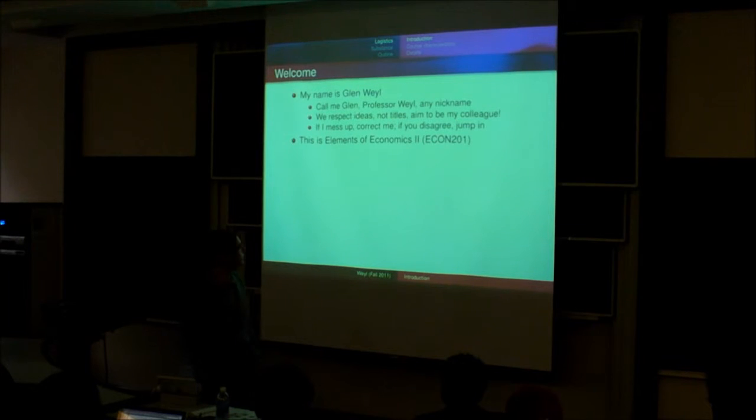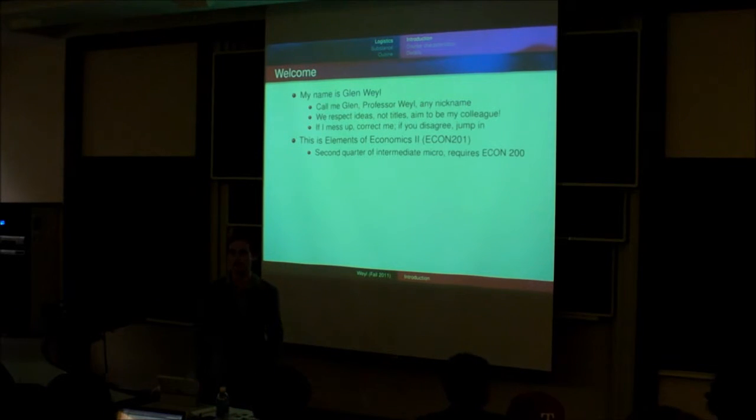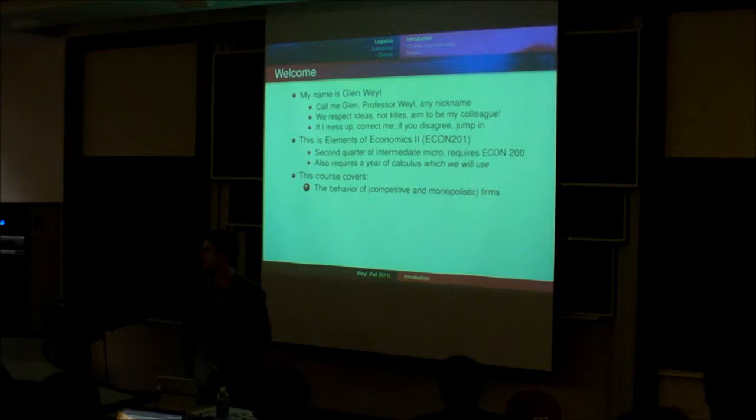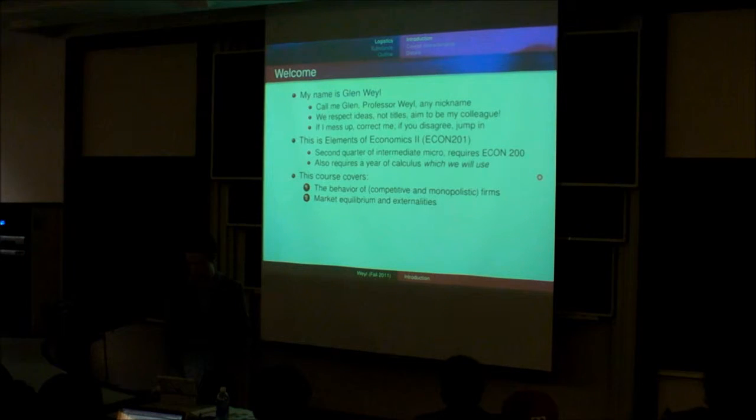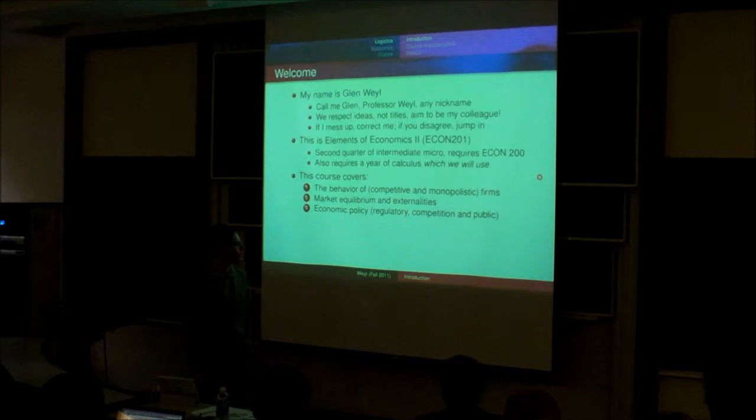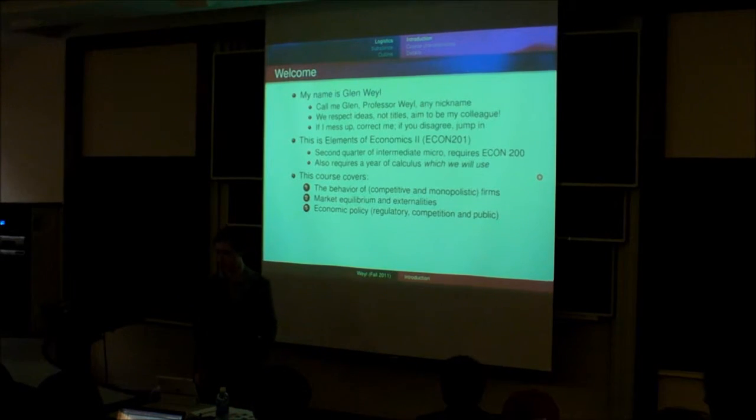This is Elements of Economic Analysis 2, also Econ 201. It's the second quarter of Intermediate Micro, and it requires Econ 200 as well as the Year of Calculus, which we will use. The course is going to cover the behavior of competitive and monopolistic firms, market equilibrium and externalities, as well as the applications of these ideas to a number of policy areas, including regulation, competition policy, and public policies like the redistribution of wealth and the provision of public service.